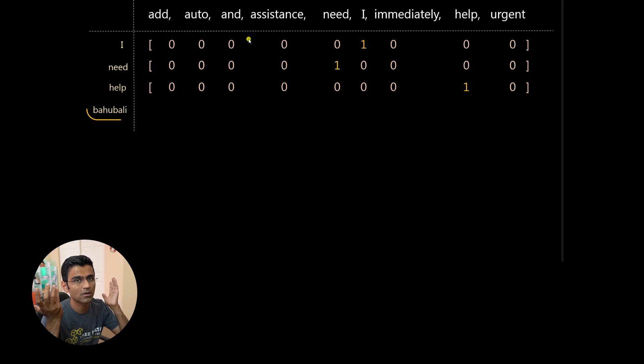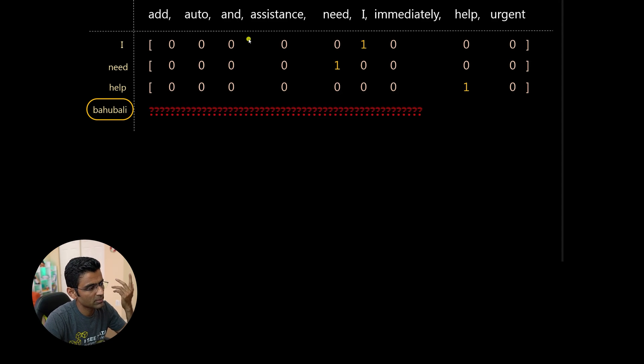So how do you represent this into one hot encoding vector? Well, you can have undefined word as the last word in the vocabulary, could be undefined or out of vocabulary. You can put it there, one there.